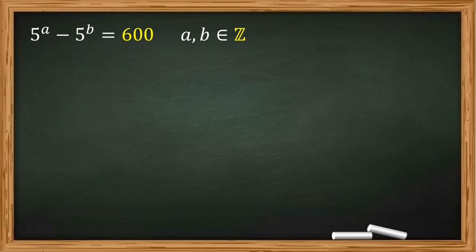First, we can consider A and B are at least 0. 5 to the A minus 5 to the B equal to 600. If you consider it's 5 squared times 24, and 24 is 5 squared minus 1. We know that B is smaller because it's positive 5A minus 5B. We can write it as 5 to the B times (5 to the A minus B minus 1).